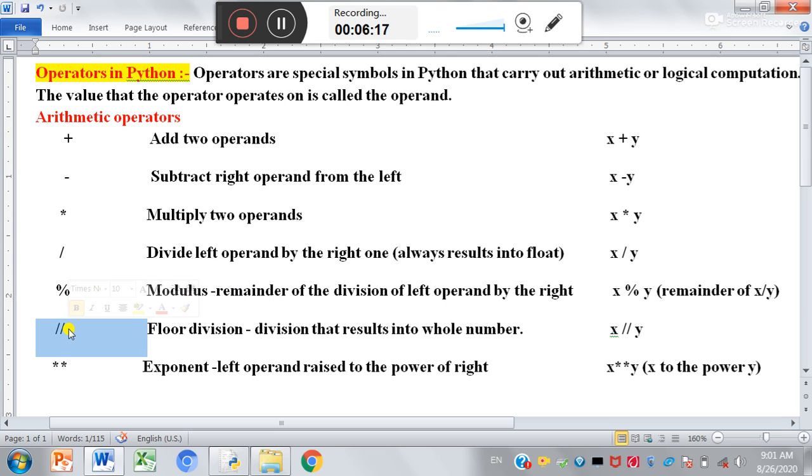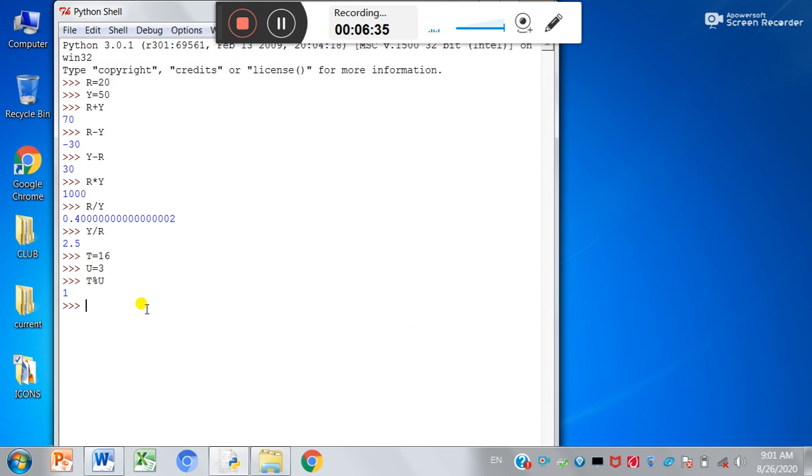Now next operator is floor division. Floor division means it returns the result into whole number. Now let us do it practically. The same thing we will do here. Let us take some new variables: b equal to 17 and e equal to 5. Now if we do b floor division 5 or e, it returns 3. Why? Because floor will remove the decimal part of the quotient and return the result in whole number. In place of floor division, if we use simple division, it returns the answer with decimal places.